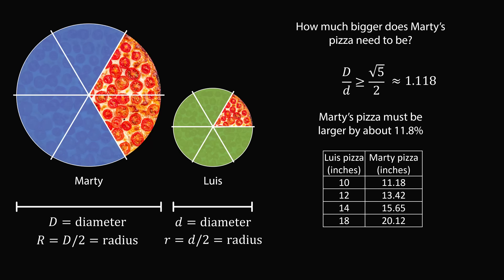So let's put that in practical terms. If Luis orders a small 10-inch pizza, Marty's pizza has to be at least 11.18 inches. If Luis's pizza is a medium 12-inch pizza, Marty's pizza must be at least 13.42 inches. If Luis orders a large 14-inch pizza, then Marty's pizza must be at least 15.65. And if Luis orders an 18-inch extra large pizza, then Marty's pizza needs to be about 20.12 inches. So we can see that if essentially Marty is ordering the next size up, his 4/6 share will be larger than Luis's 5/6 share. It's not that hard for Marty to order a larger pizza and eat more pizza than Luis.